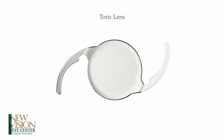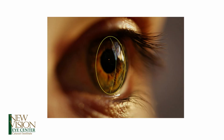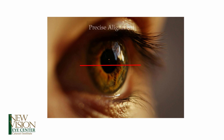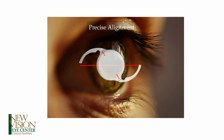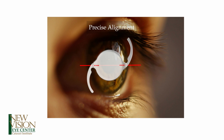Astigmatism-correcting toric lens implants are a little bit different than typical lens implants in that they have special alignment markings that are used to align the lens properly during the surgery. It's imperative that those markings be perfectly aligned with the short, more curved direction of the astigmatism, which is denoted by the red line in this picture. We use special computer imaging systems to ensure that this alignment happens as precisely as possible.